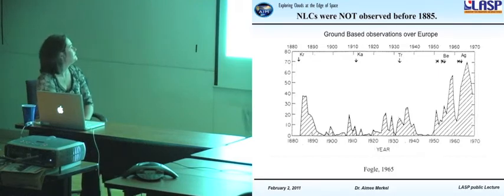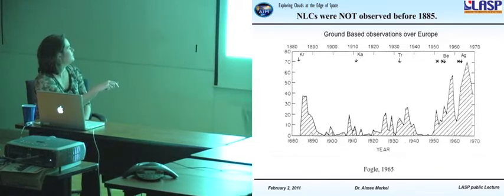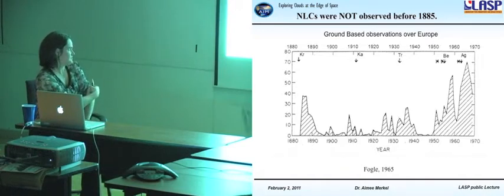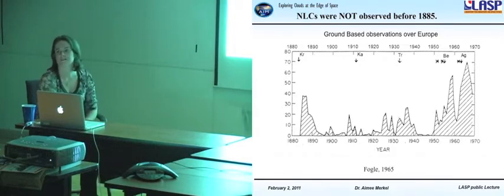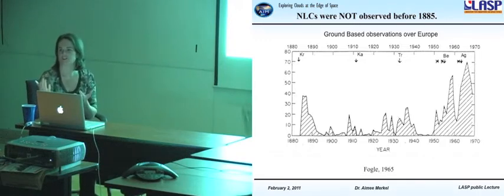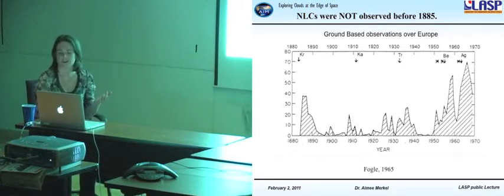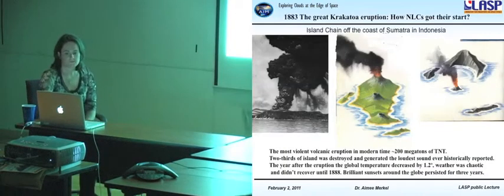So like I've mentioned before, NLCs were not observed before 1885. This is a ground-based observation record over Europe. And so you can see that they've been progressively increasing in sightings. This only goes to 1970, but I'll show you a slide later that ground-based observations keep going up. Now there is controversy with this plot because people say, well, more and more people looking, there's probably going to be an increase in observations. However, it's not like there weren't great astronomers looking in the skies before 1885. Galileo, Kepler, Newton, amazing people, amazing astronomers looking in the skies all the time. And nothing was observed until 1885.